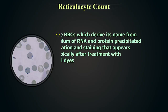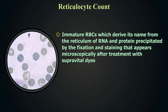Reticulocytes are immature red blood cells. They derive their name from the reticulum of RNA and protein precipitated by fixation and staining, which appears microscopically after treatment with supravital dyes.